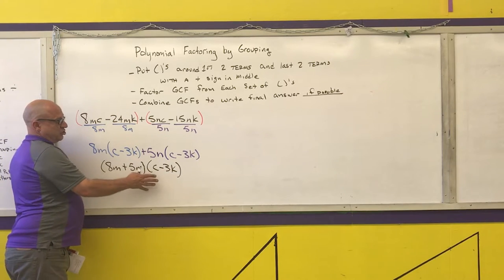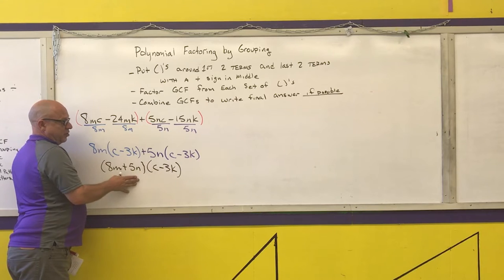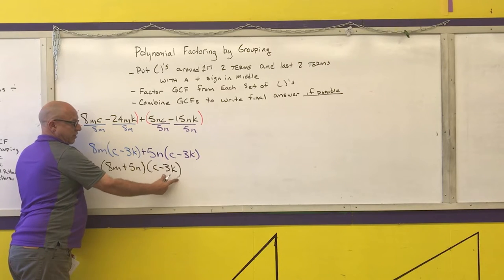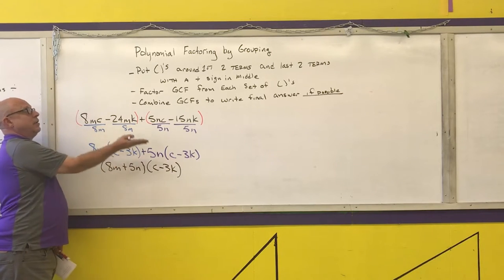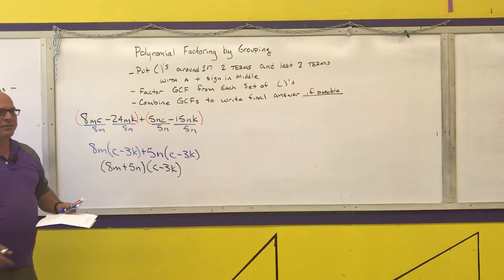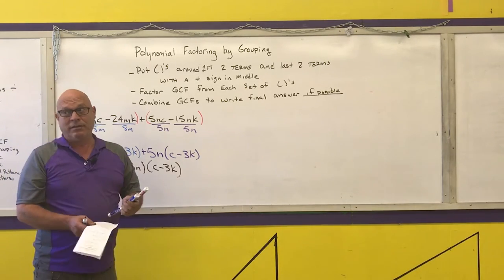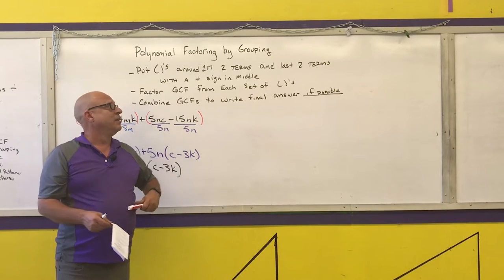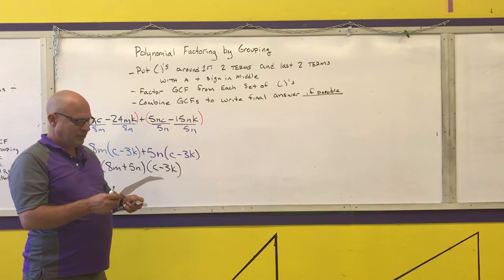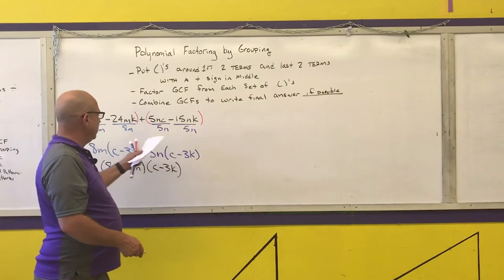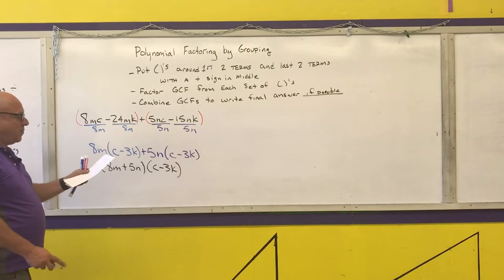When I showed you the distributive method for multiplying a binomial times a binomial, you take each term times the other and write it down. So you should be able to see that factoring is the opposite of multiplying, and the opposite of multiplying is division. Basically, factoring is doing division on portions of polynomials, and I use division here to come up with my factors.